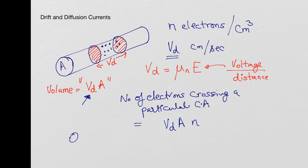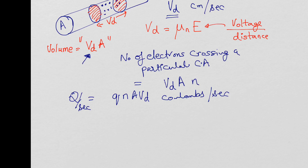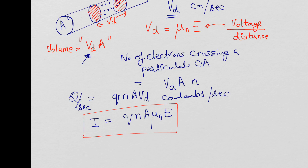Now if you want to find the charge Q that crosses the cross-sectional area, we just multiply by the electronic charge. So it will be Q × n × A × Vd coulombs per second, which is nothing but the current. This is coulombs per second because we took how much charge is moving in one second. So I_drift = q × n × A × Vd, and since Vd = μn × E, this gives us the drift current in semiconductors or metals.